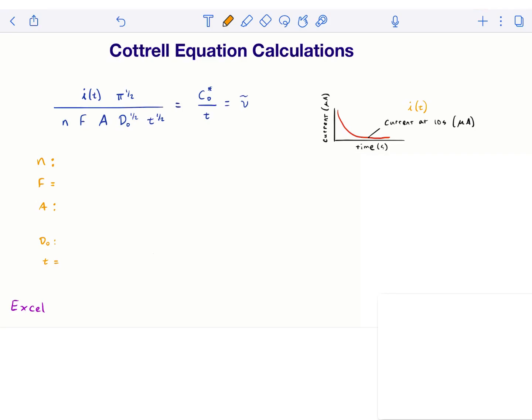In this video we'll talk about how to do the calculations for the amperometry lab. So the lab handout gives us the Cottrell equation, which describes what factors lead to the current at a certain fixed potential in an electrochemistry experiment.